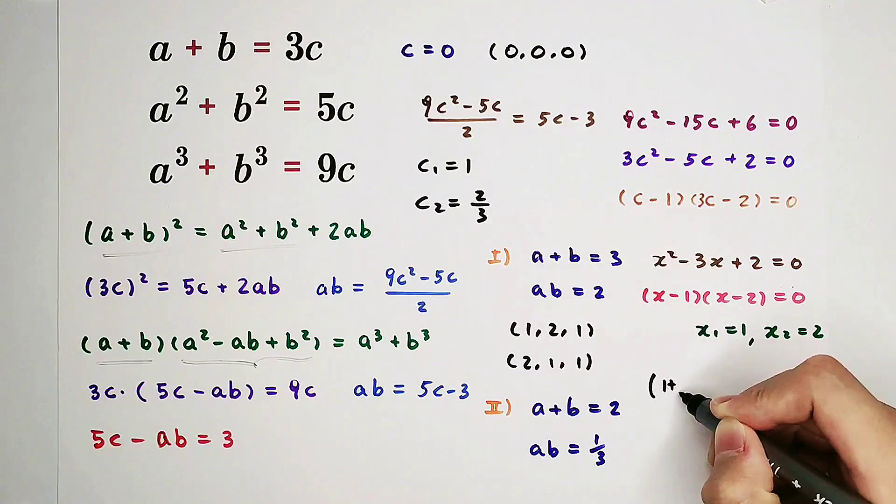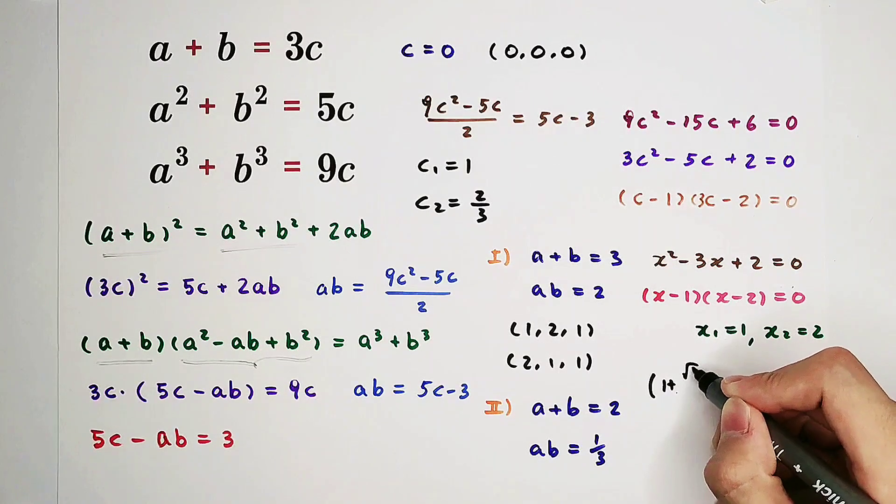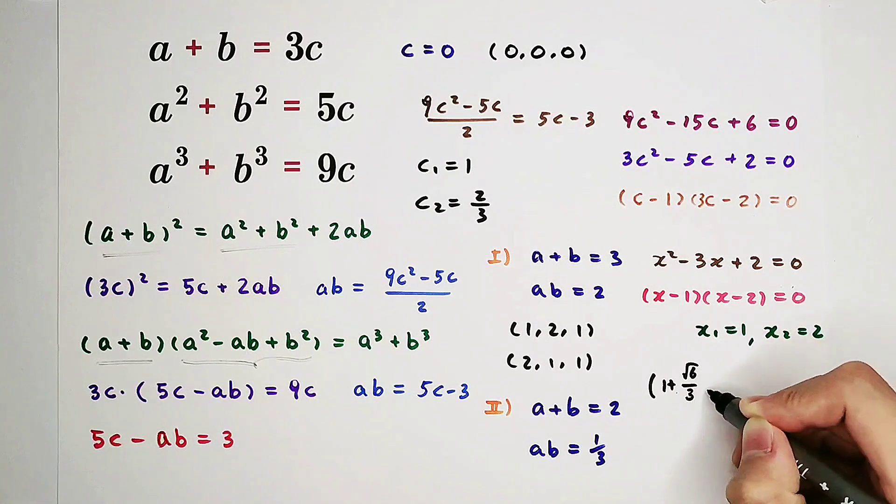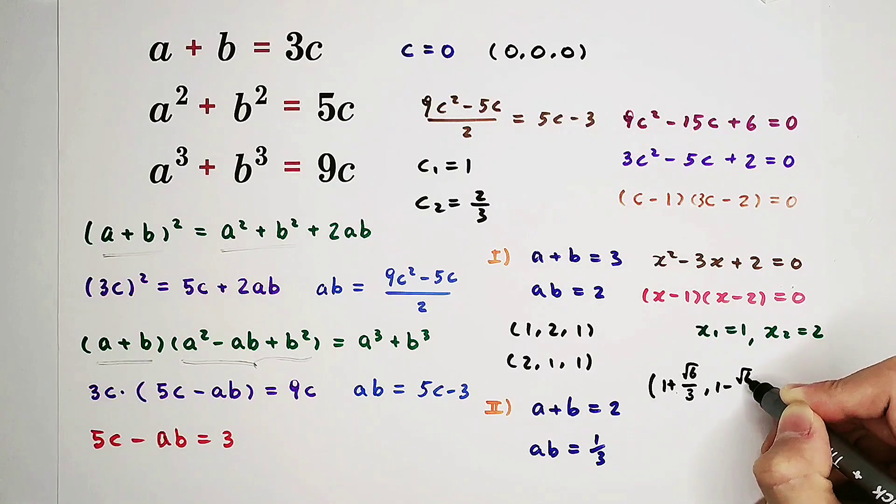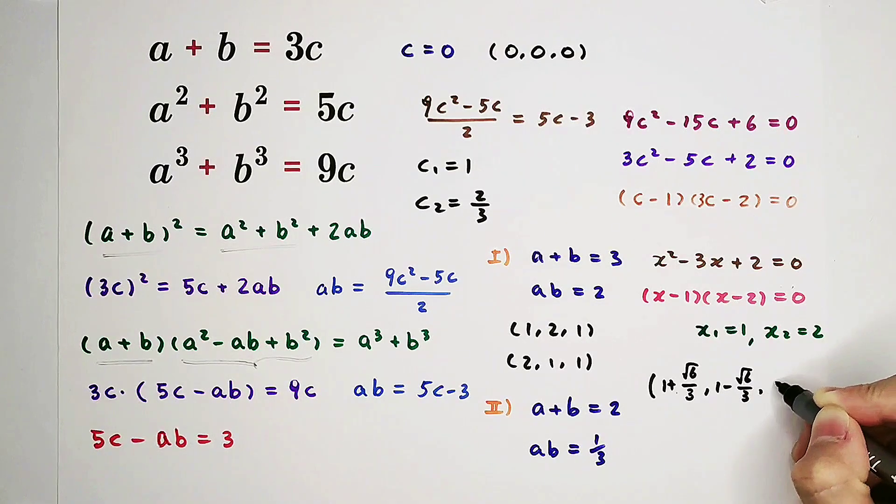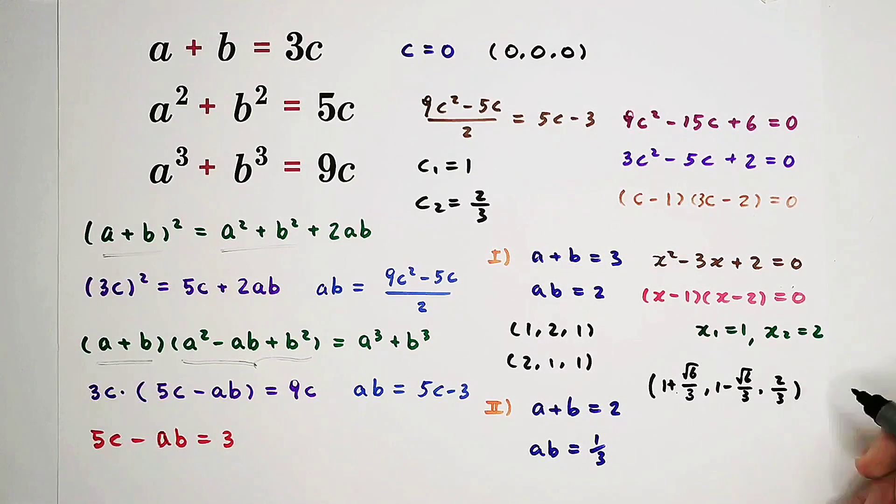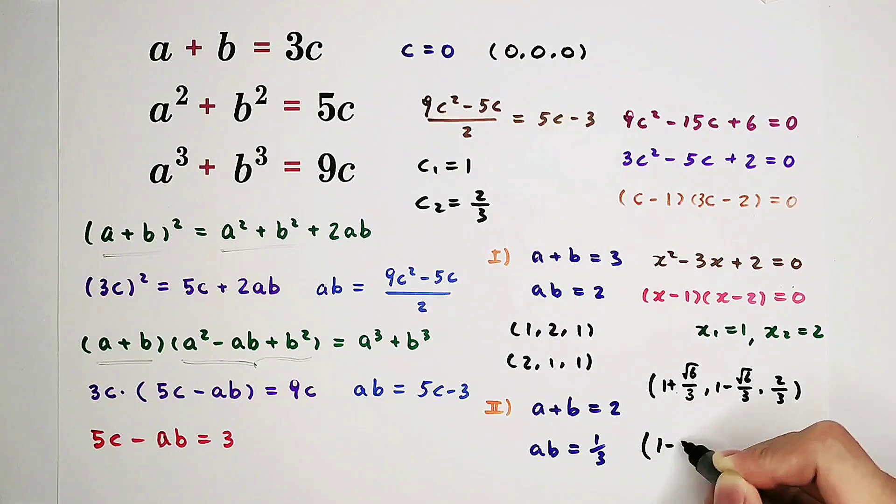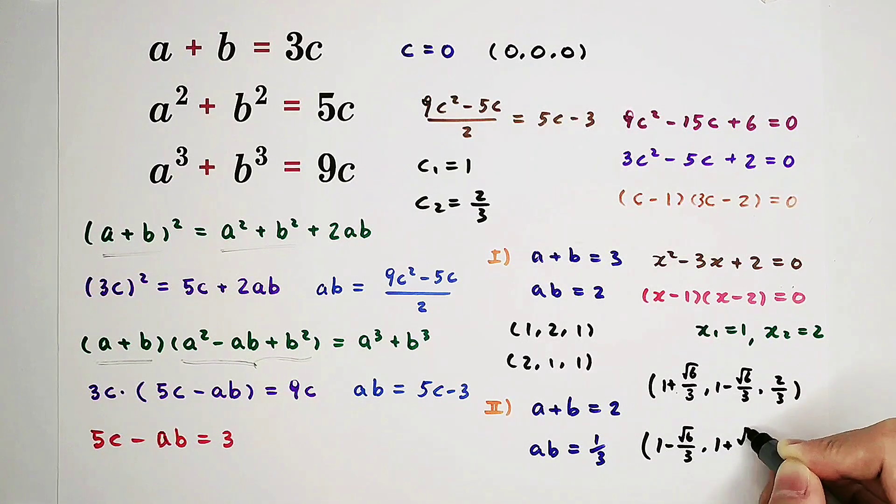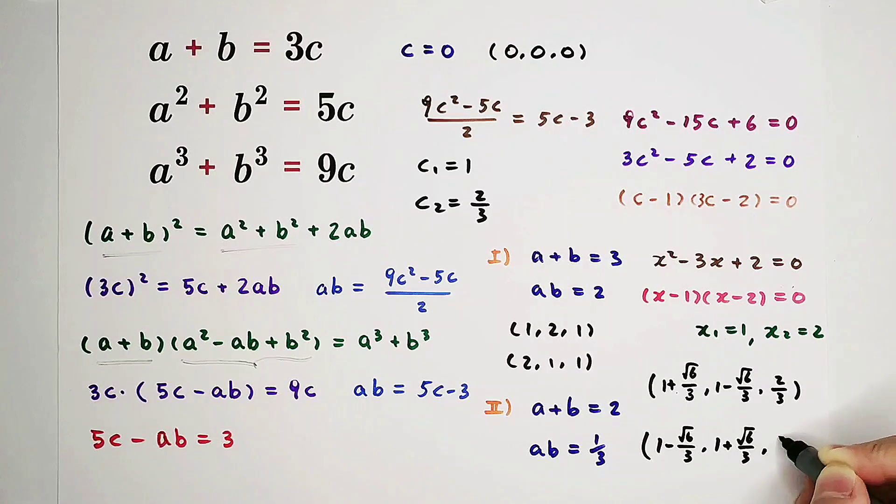1 plus square root of 6 over 3, 1 minus square root of 6 over 3, and 2 thirds. And the other one, 1 minus square root of 6 over 3, 1 plus square root of 6 over 3, and 2 thirds.